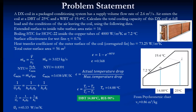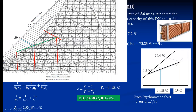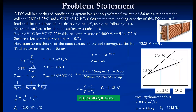From the psychrometric chart, the exit conditions are DBT = 14.88°C and relative humidity = 90%. To calculate cooling capacity, we need enthalpies at inlet and outlet: h_i ≈ 56 kJ/kg and h_o ≈ 39 kJ/kg from the psychrometric chart. Q_L = m_a · (h_i − h_o) = 3.023 × (56 − 39) ≈ 51.39 kW. This gives us both the total cooling capacity and the exit conditions of the DX coil.